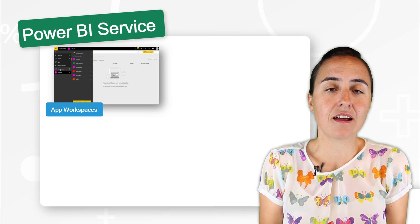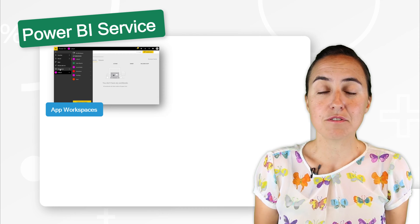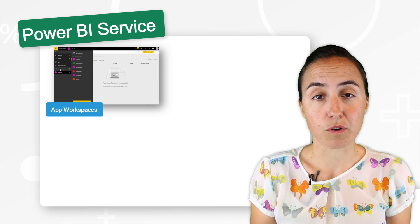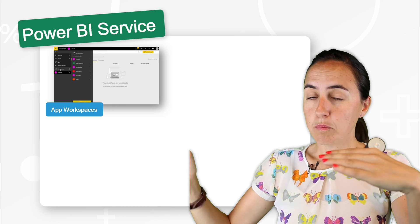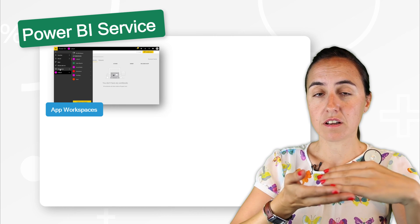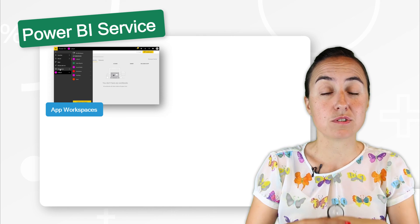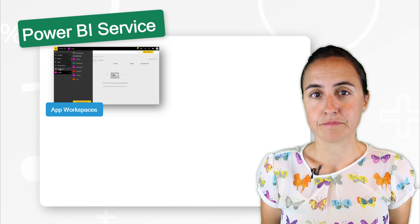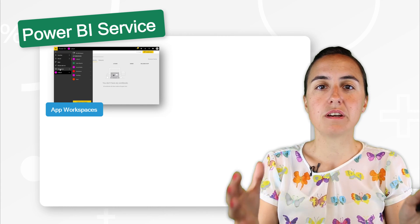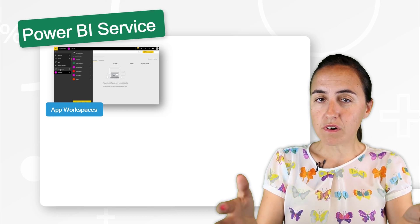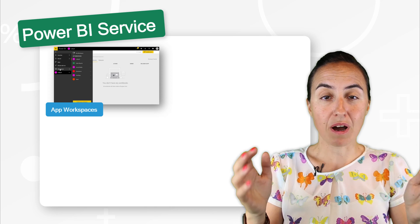For example, if you are the manager for the marketing team and you have a few reports to share with your group, you create a marketing workspace, publish all the reports there, give access to your users, and they will be able to see everything. If you give access to the workspace, people will be able to edit, create new reports — they will be able to do what analyst-empowered users do.